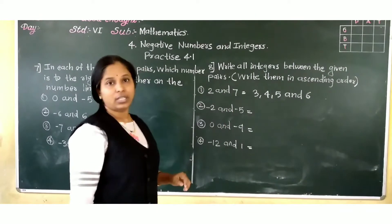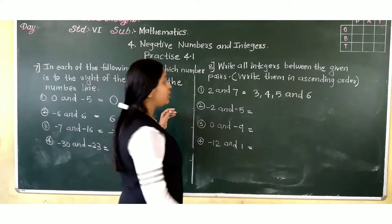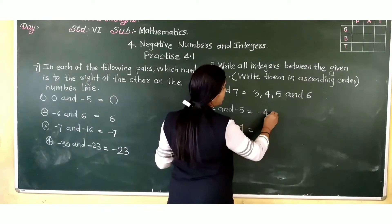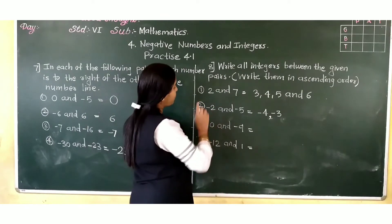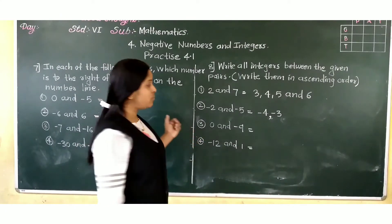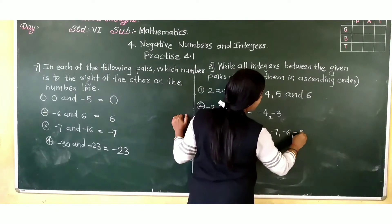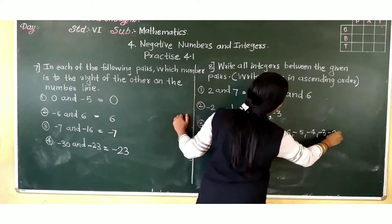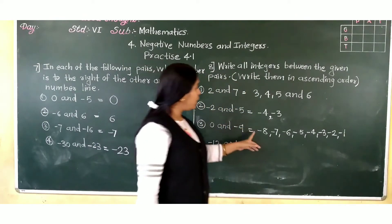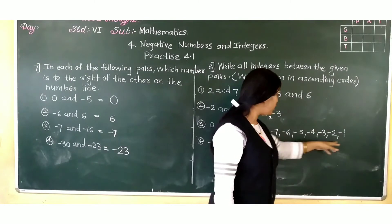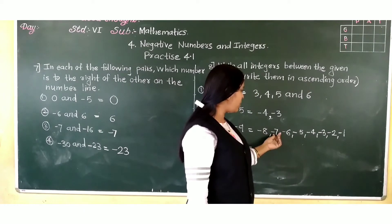Now minus 2 and minus 5. Then 0 and minus 9: between these, which integers will be there? Starting from the smallest: minus 8, minus 7, minus 6, minus 5, minus 4, minus 3, minus 2, minus 1. Now students, minus 8 is smaller than minus 1. Among all these integers, minus 1 is greater. Minus 8 is smaller than minus 7; minus 7 is smaller than minus 6; minus 6 is smaller than minus 5, and so on.